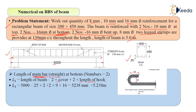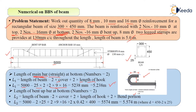Putting in values: 5000 mm minus two times 25 mm cover, plus two times hook length. For a 180-degree bend, hook length is taken as 9 times the diameter of the bar (9φ). So two times 9 times 16 mm. After calculations the length L1 comes as 5238 mm, that is 5.238 meters.